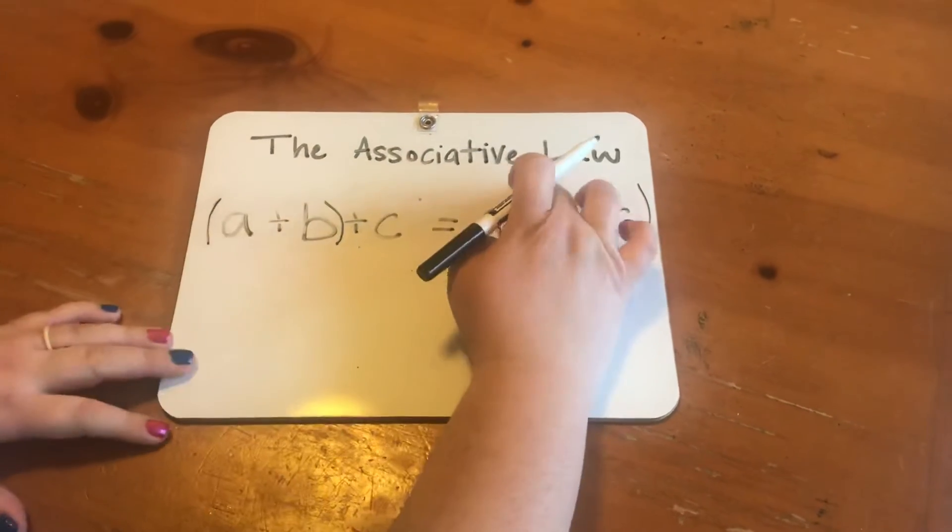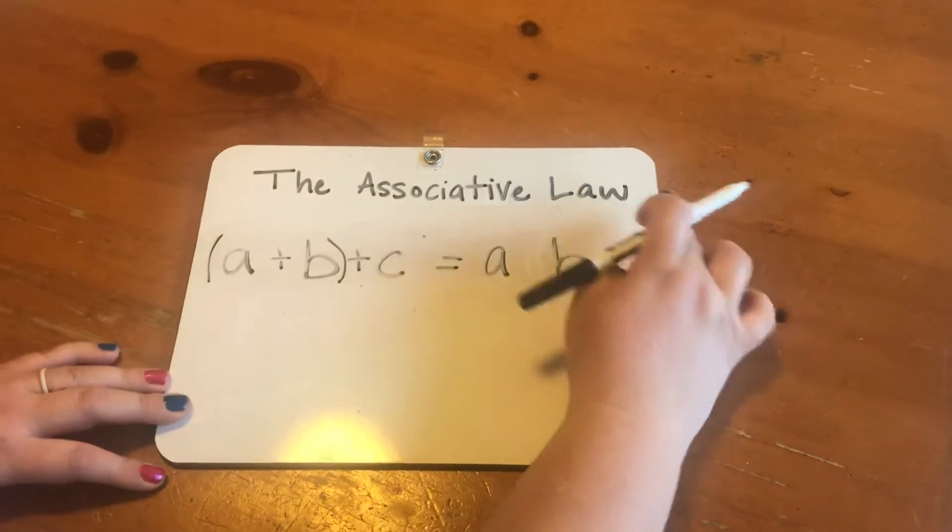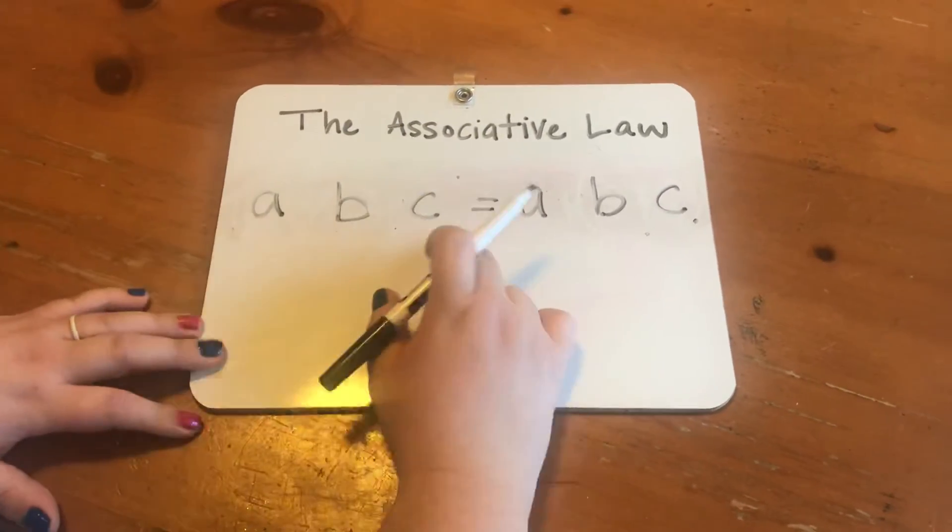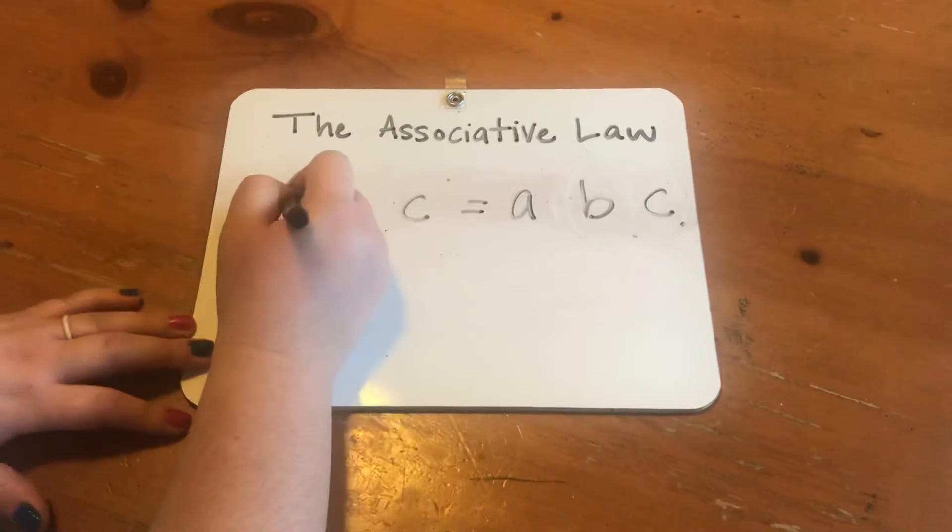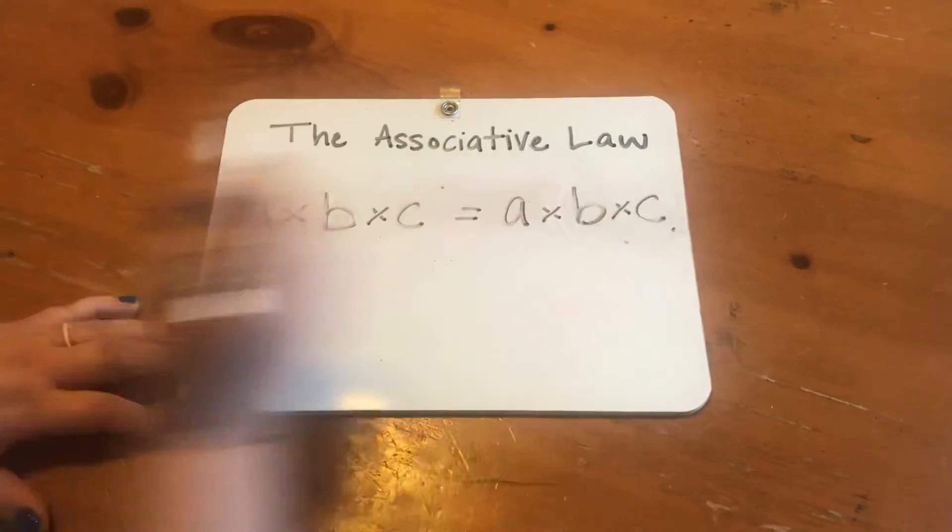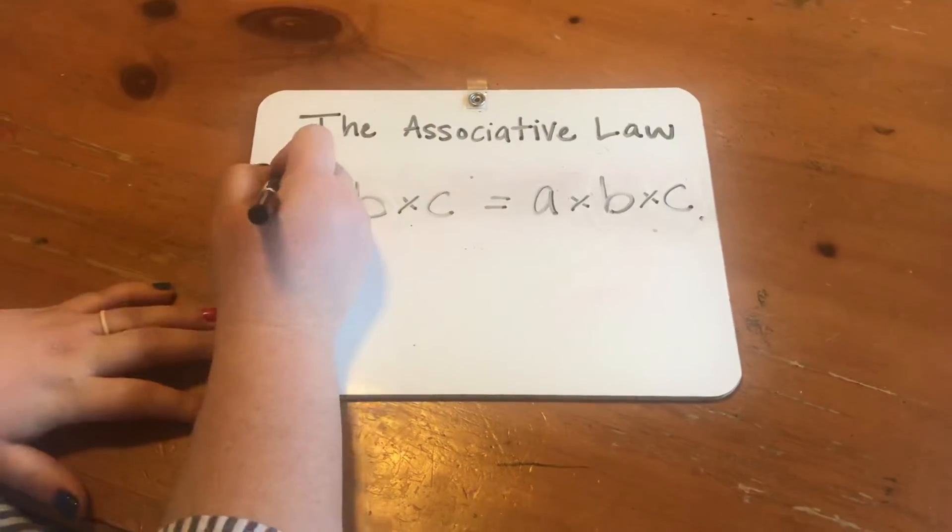For multiplication, same thing. The associative law for multiplication, we start with ABC equals ABC. Except we're going to need multiplication signs in between and then again, plug in our parentheses.